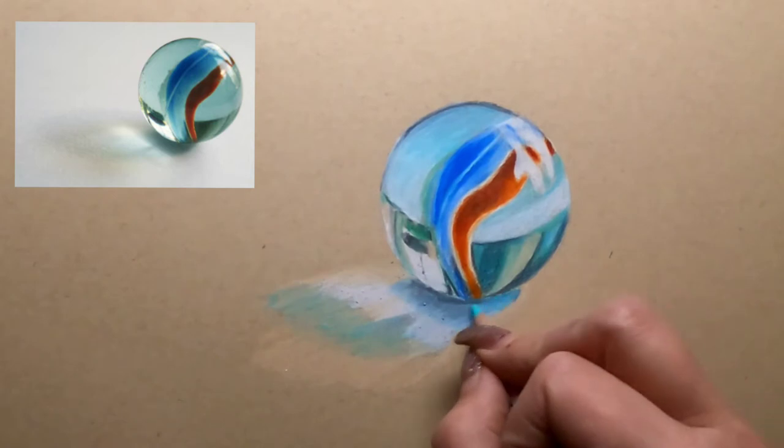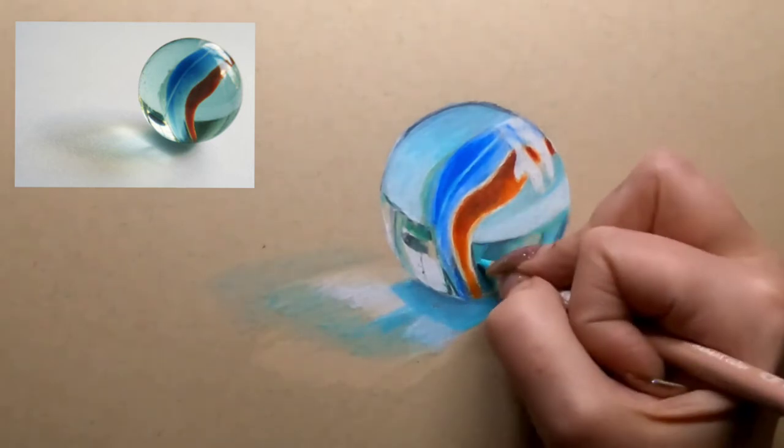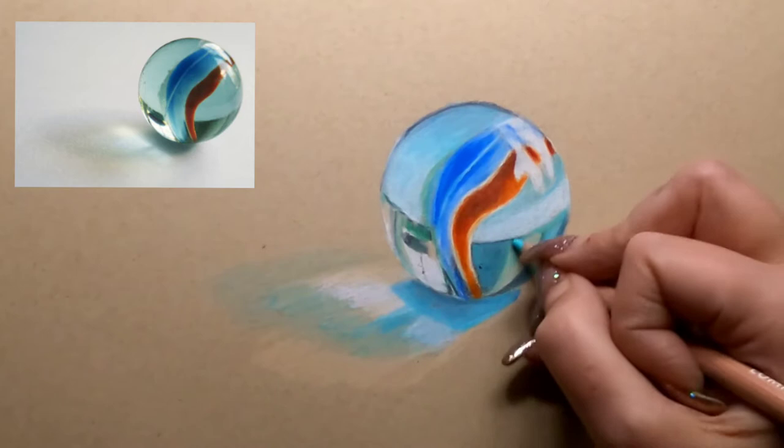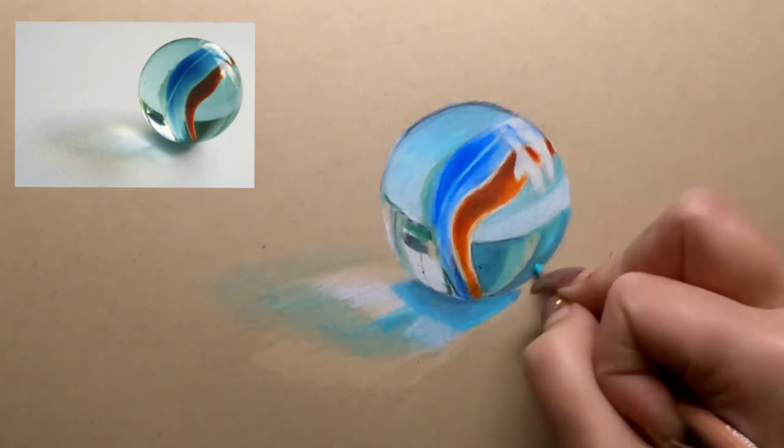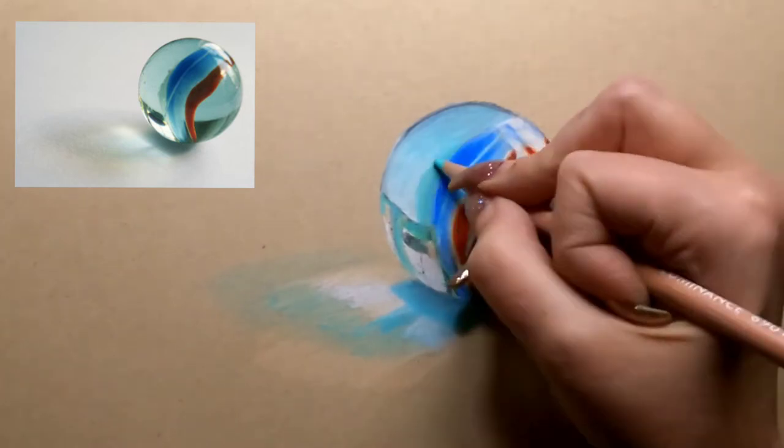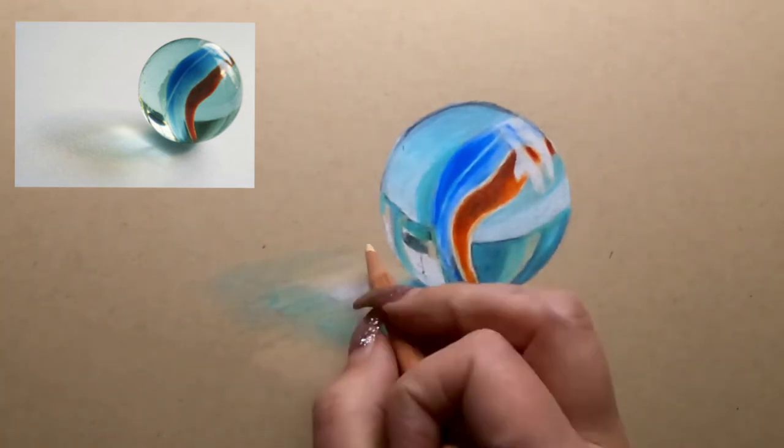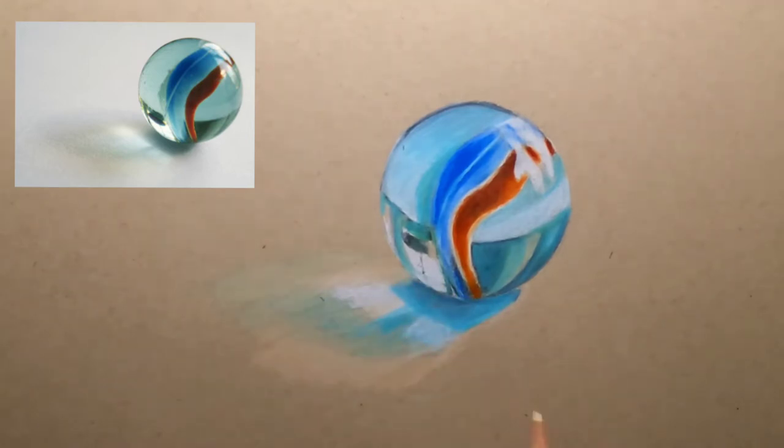So that would be a good exercise for you to take a look at. But today we're just using this tone tan paper and I kind of like it, but I do really like the crispness of a white paper and I think this marble would have popped a lot better on a white paper. But I will try that exercise for you and we can compare them down the road.